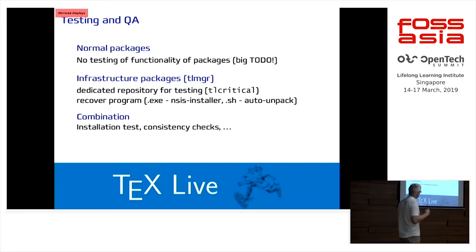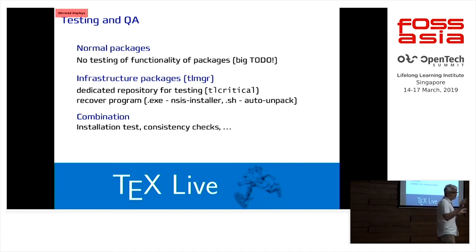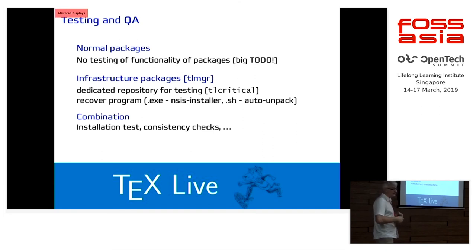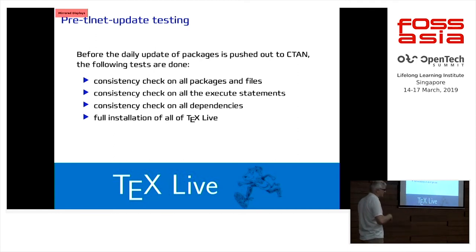For our infrastructure packages, we have separated them completely — we have a dedicated repository for people who want to live on the edge and try new features, through TeX Live Critical. We have recovery programs for Windows and shell scripts for all kinds of Unix systems, so if the TeX Live Manager breaks down completely you can recover. Before we push out to our mirrors — the CTAN mirror network — we do a lot of checks: we check all packages and all files for consistency, whether files are doubly included, packages mentioned but not existing, and so on.